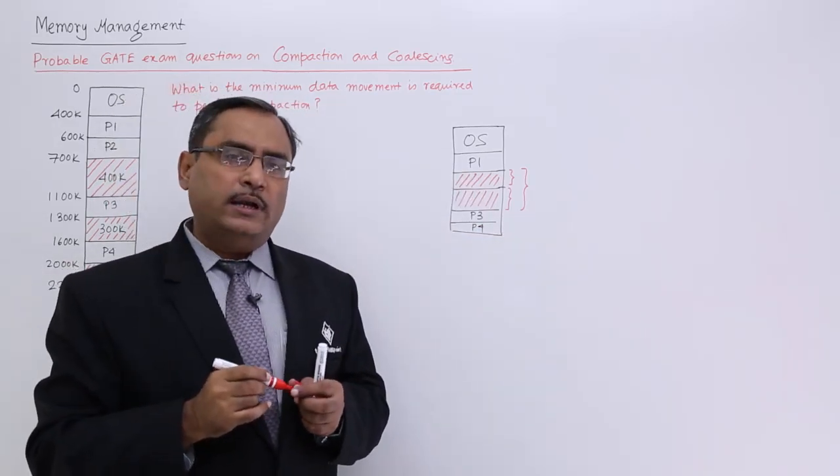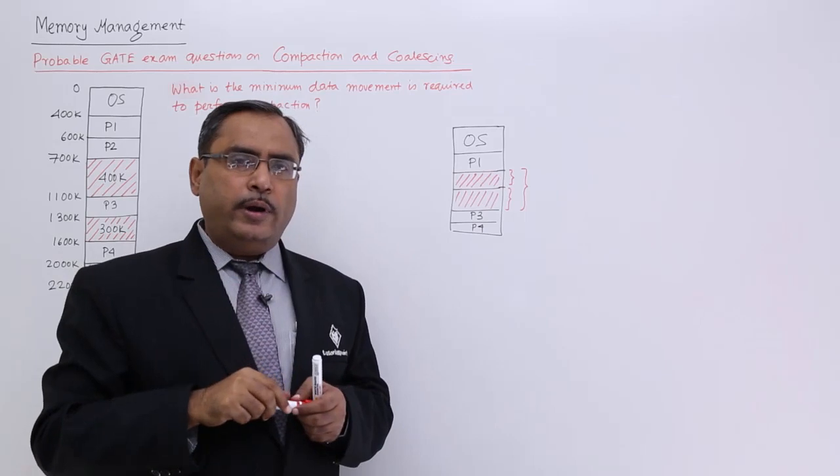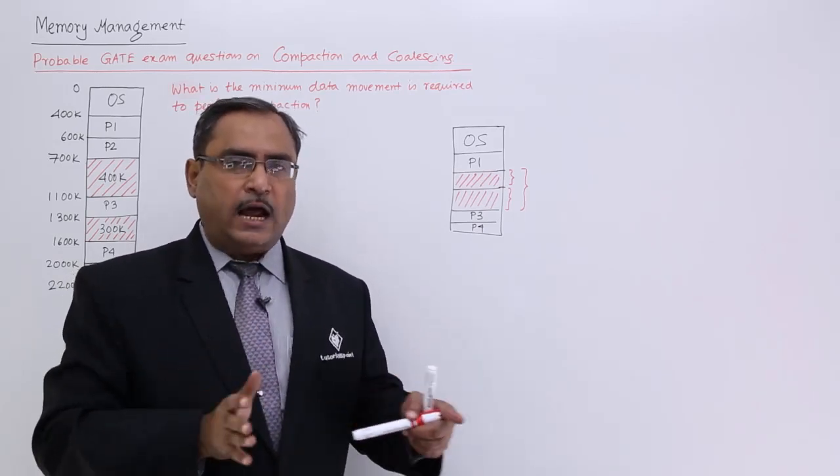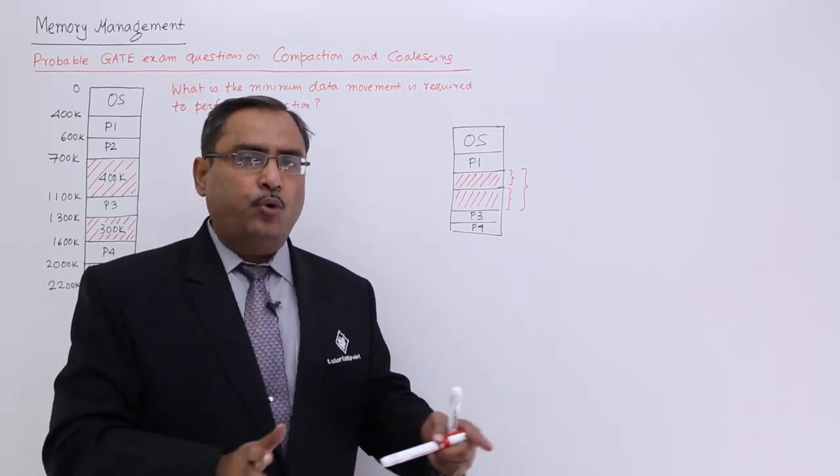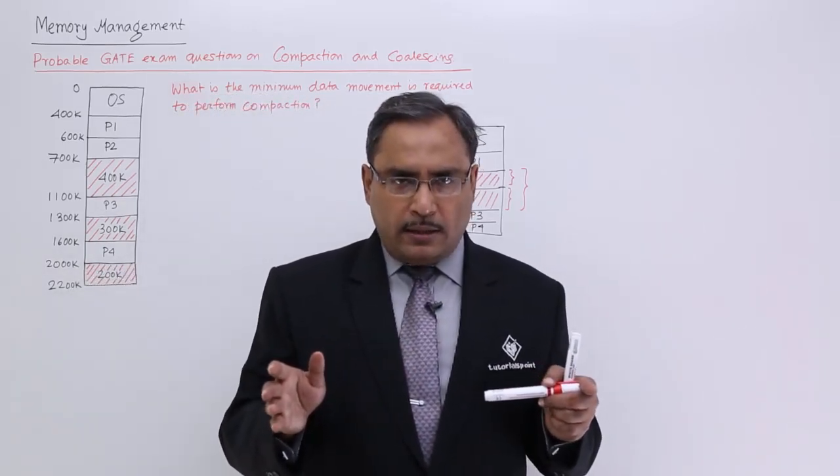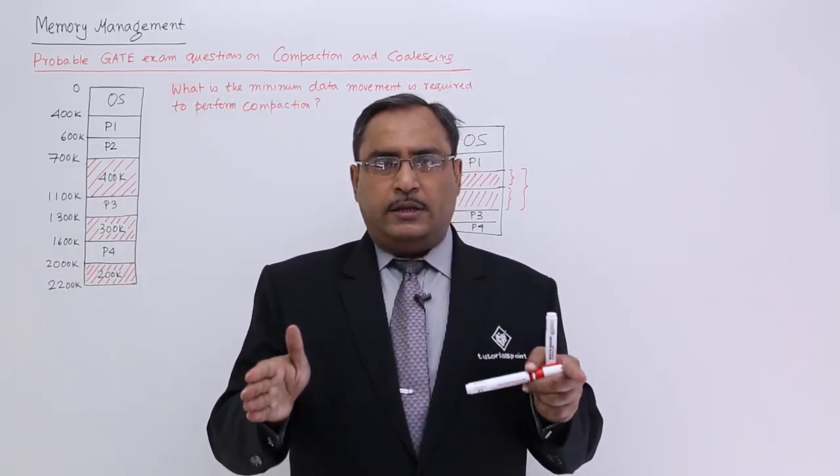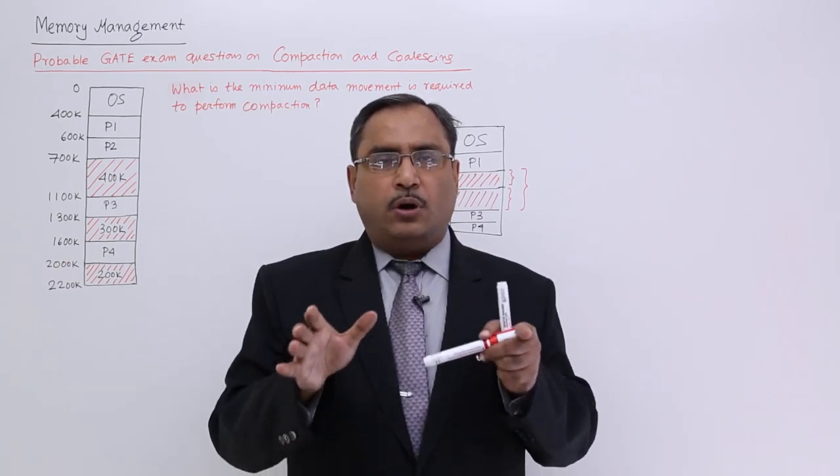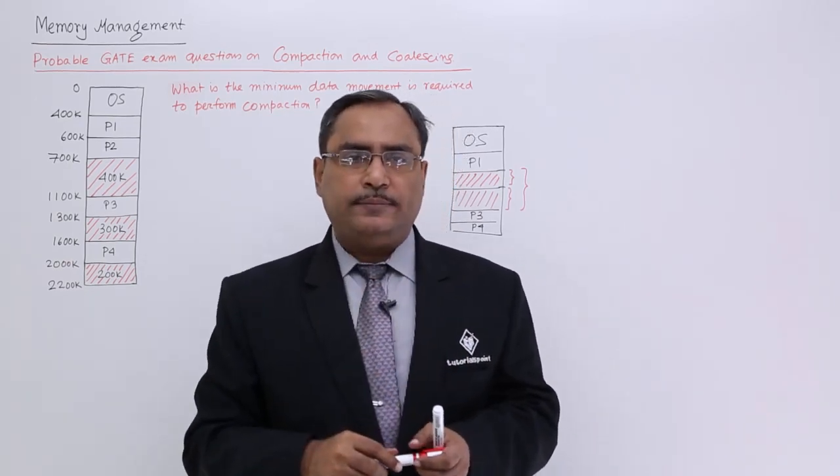But coalescing will coalesce, that means, it will amalgamate two adjacent free spaces and it will register it in the page map table, that this is the total free space available. So, that is known as a coalescing. Coalescing does not require any physical movement of data or physical movement of program from one zone to another zone. Coalescing means, you are just amalgamating two free spaces, which are adjacent.